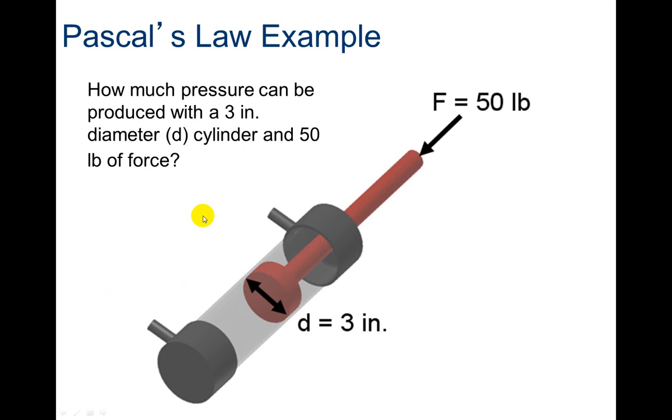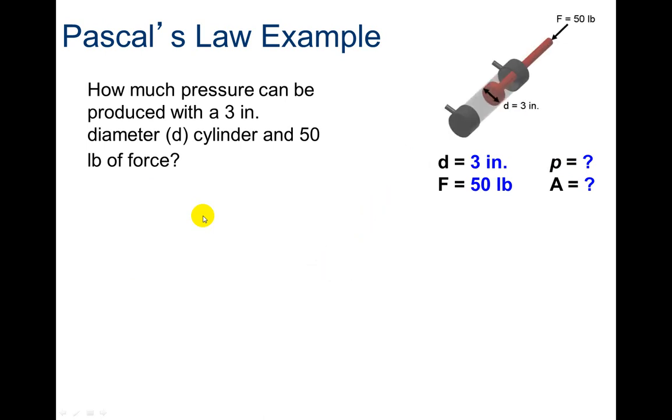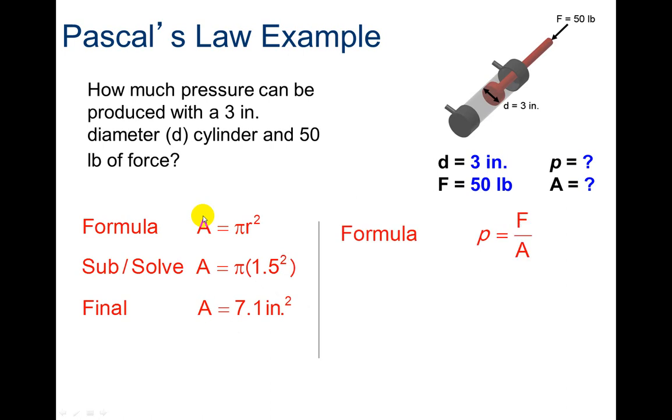So Pascal's Law example: how much pressure can be produced with a 3-inch diameter cylinder and 50 pounds of force? We write down our knowns. I'm going to find my area, pi r squared, so it's 7.1. I'm going to plug that in for my area since I had the diameter. Now I'm going to plug in: my pressure is going to equal 50 pounds divided by 7.1 inches squared. And knowing that, you know, in Pascals it's Newton per meter squared, more than likely Pascal's Law was more with the metric system. But because we're engineering, we're in the United States, that's why we'd use PSI instead. So the final answer is 7.0 pounds per inch squared.